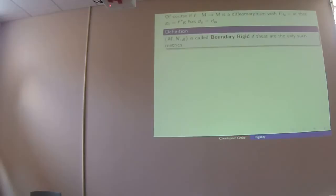A manifold is called boundary rigid if the only metrics that have the same boundary distance function are the pullback metrics — i.e., isometric metrics. So you get uniqueness from the boundary distance function. The first thing is examples of non-rigid manifolds.